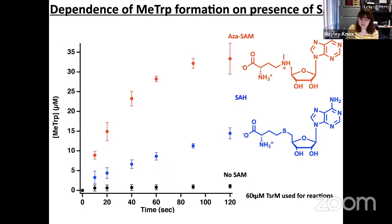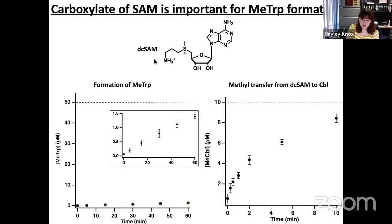To study the role the carboxylate plays in turnover, we can use a SAM analog known as decarboxy-SAM — SAM without the carboxyl group. Taking 50 micromolar TSRM with decarboxy-SAM and tryptophan, and monitoring product formation over 60 minutes, we obtain just over one micromolar of product, which is nowhere near close to a single turnover. To further verify that decarboxy-SAM can still bind TSRM correctly, we monitored the rate of methyl transfer from decarboxy-SAM to the cobalamin. Over 10 minutes, we are almost able to fully methylate TSRM, indicating that the carboxylate of SAM plays a pivotal role in the methylation of tryptophan.